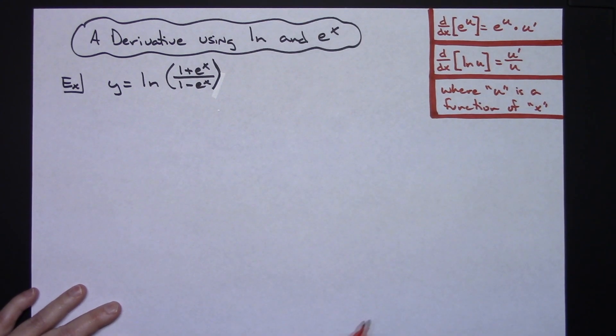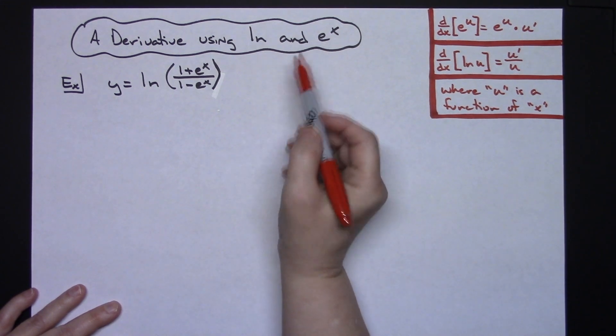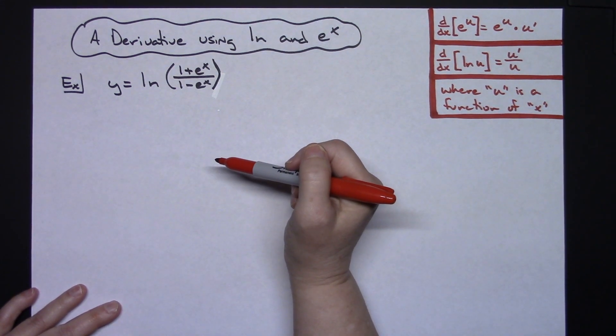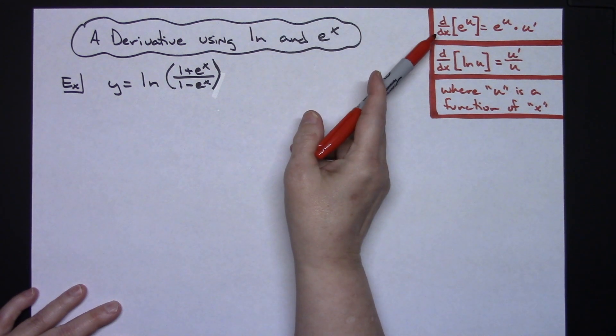In this video I'm going to be doing one derivative that has a natural log and e to the x in it. So for starters, we have to make sure that we know those two derivatives.